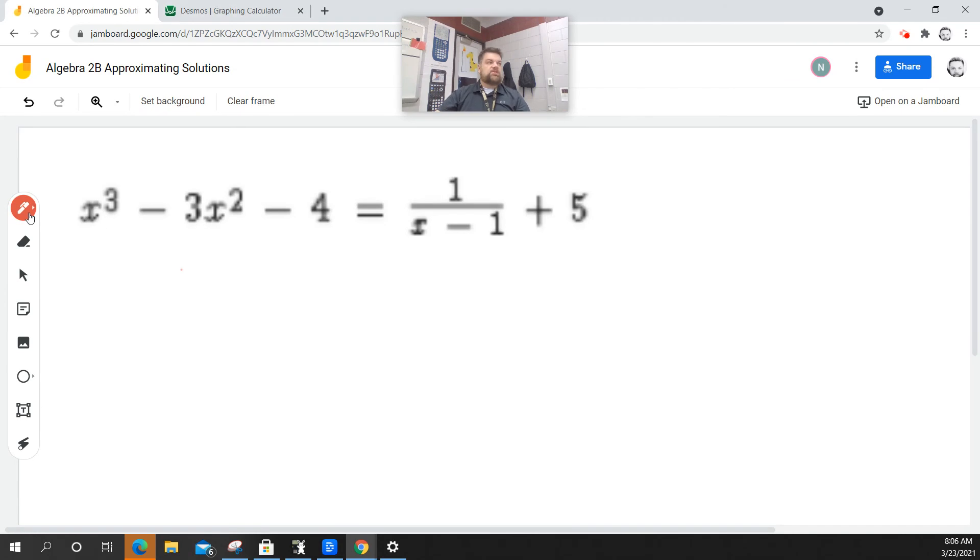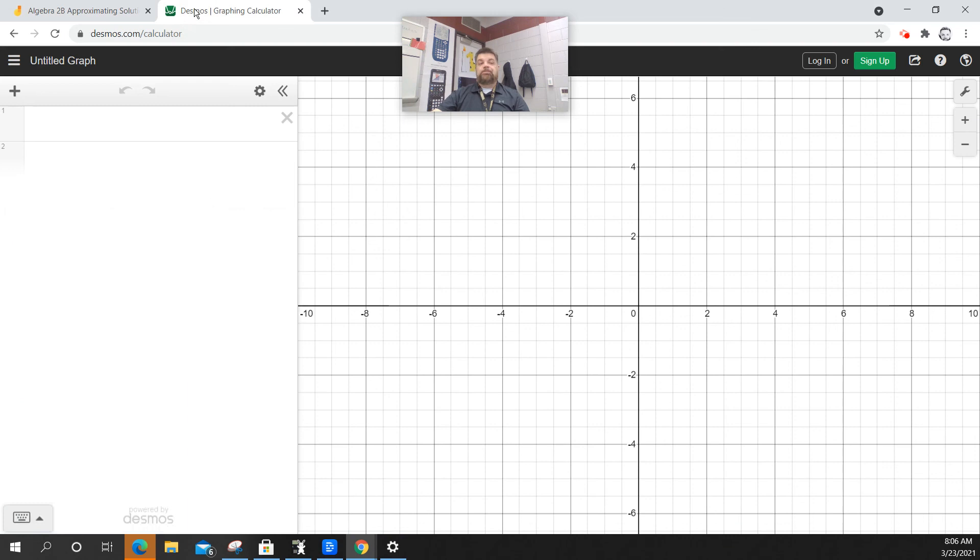To find these solutions, what I need to do is just graph the left-hand side and graph the right-hand side of the equal sign and see where they cross. If they don't cross, guess what? No solution.